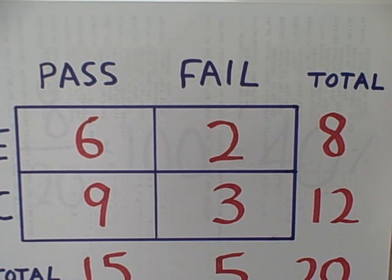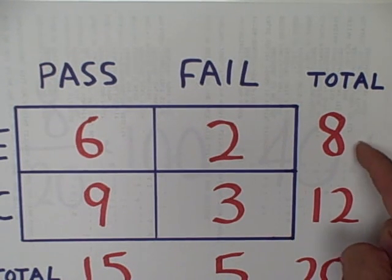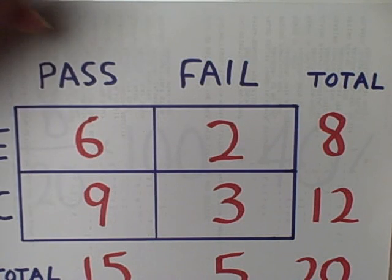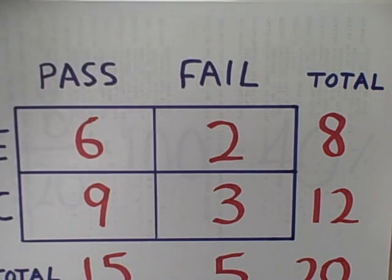So let's take a look at a 2 by 2 contingency table that might be the results of an experiment. Our sample size was 20 subjects total and 12 of those were in a control group and 8 were selected to be in the experimental group. The dependent variable was whether or not each participant passed or failed a test at the end of the experiment.